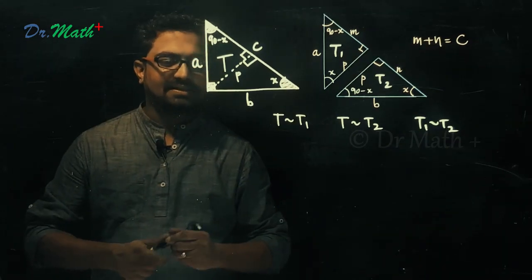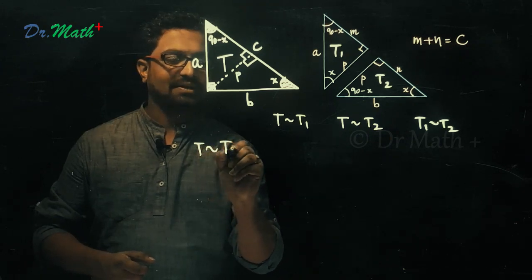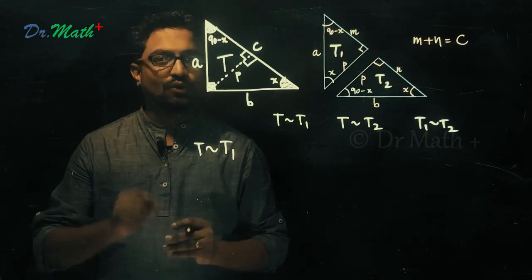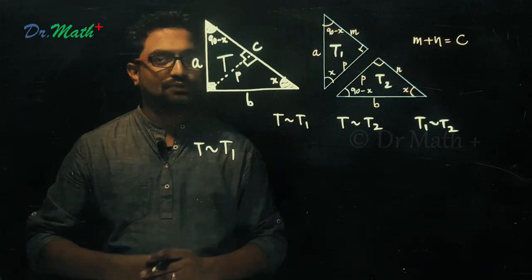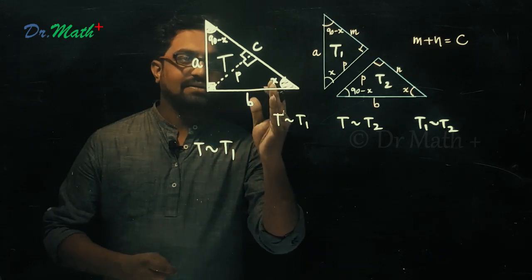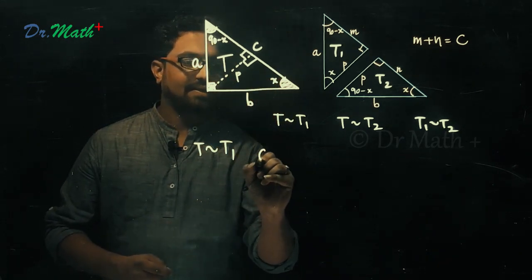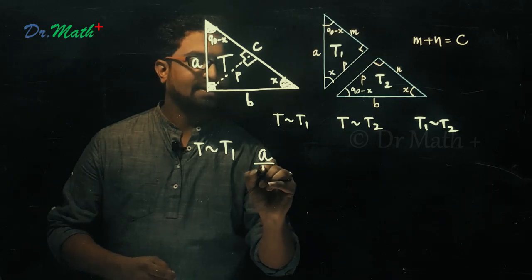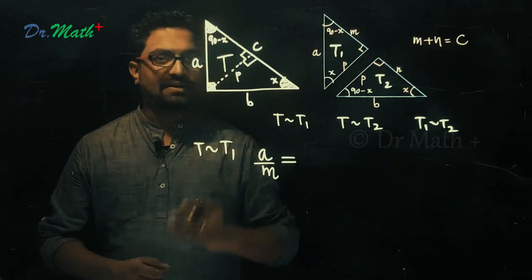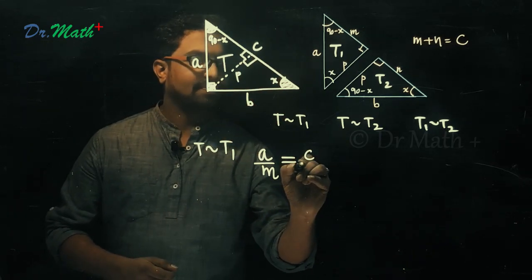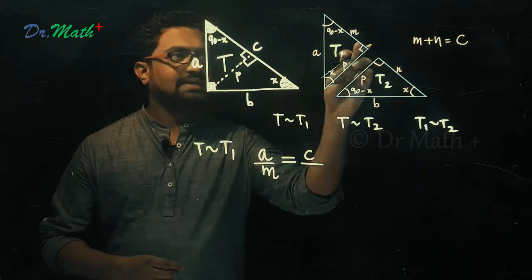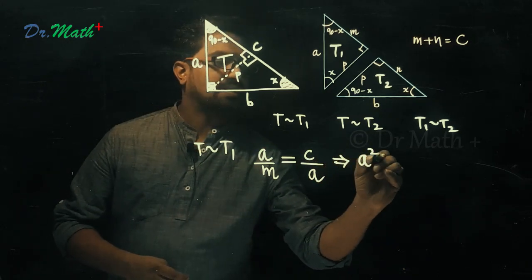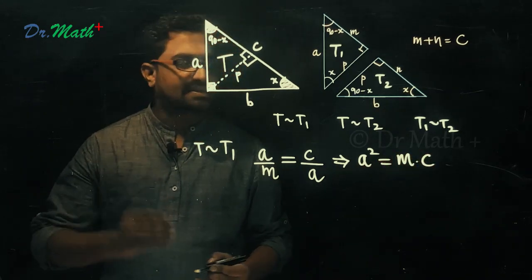Let us consider the first result: T is similar to T1. If two triangles are similar, their sides are proportional, so we identify corresponding sides and write their ratios. In the bigger triangle T, the side opposite to X degrees is A; in the small triangle T1, the side opposite to X degrees is M. The side opposite to 90 degrees in T is C, and in T1 it is A. Cross-multiplying gives us A square equals M times C — let me call this Result 1.